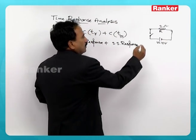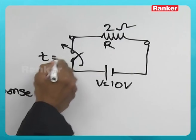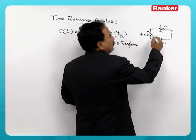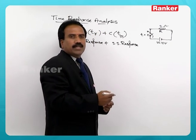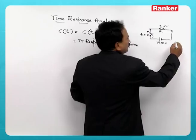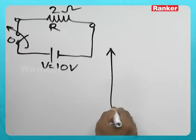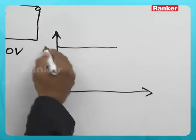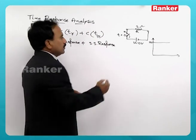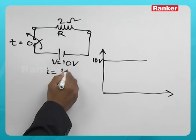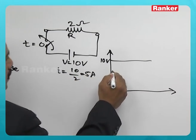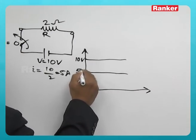Then when the switch is closed at t equal to 0, there will be a current that flows through the circuit. V is 10 volts, then current is 10 by 2, so it is 5 amperes.